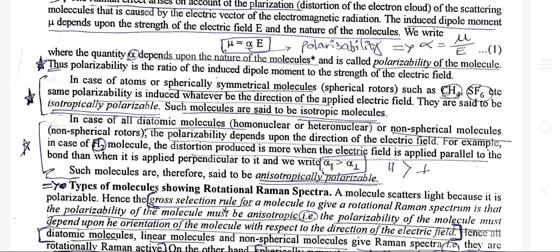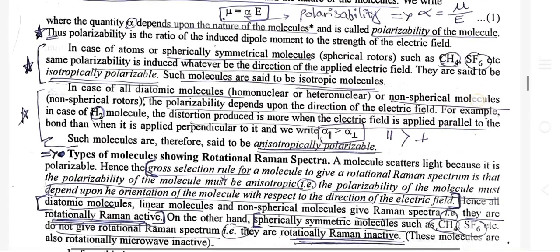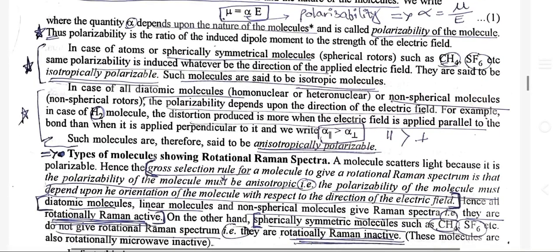Polarizability is the ratio of the induced dipole moment to the strength of the electric field. In the case of atoms or spherically symmetrical molecules such as CH₄ and SF₆, the same polarizability is induced whatever the direction of the applied electric field. They are said to be isotropically polarizable, and such molecules are called isotropic molecules.